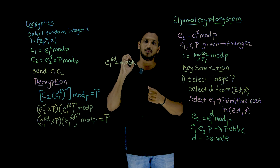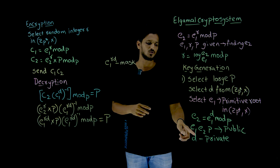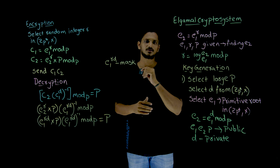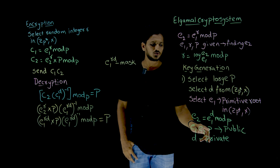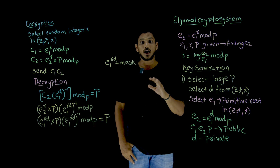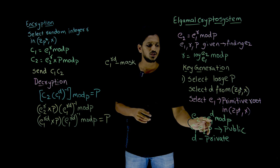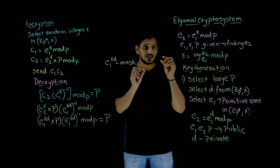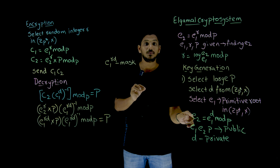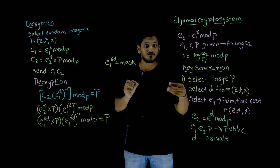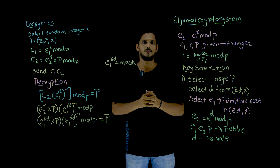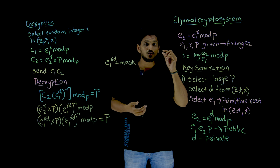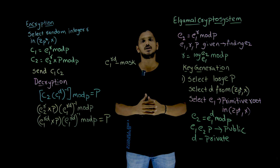So e1, e2, and p are given as public keys. One important point: e2 equals e1 power d mod p, meaning indirectly the d value is embedded inside e2. So indirectly, d is being sent to the sender — he is going to use the d value indirectly. You need to understand this point because the entire encryption and decryption is based on this.